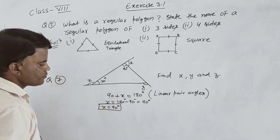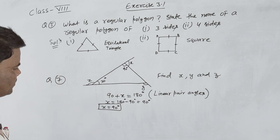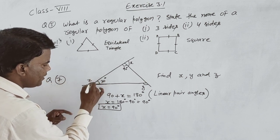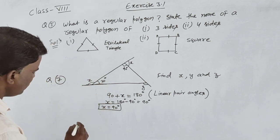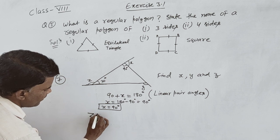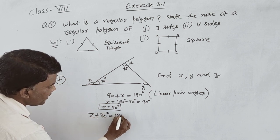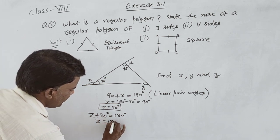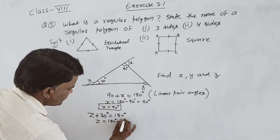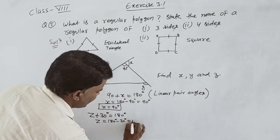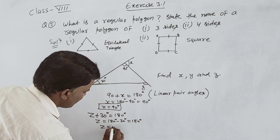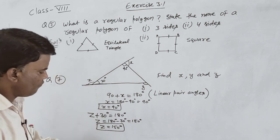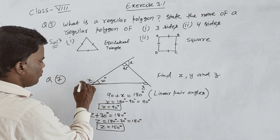For z, using linear pair angles, z plus 30 degrees equals 180 degrees. Transferring 30 to the other side, z equals 180 minus 30, which gives z equals 150 degrees.